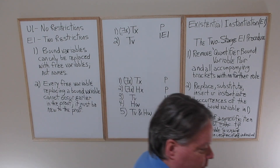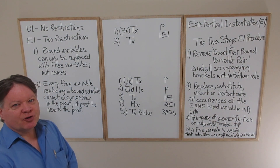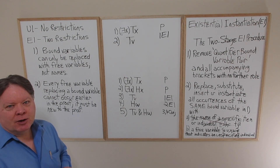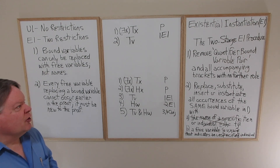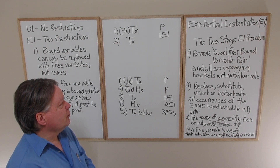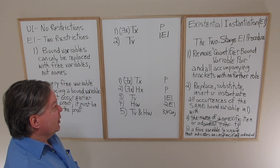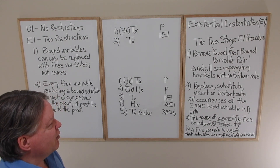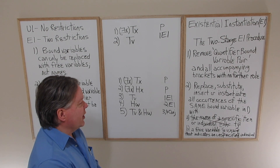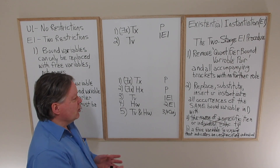Having set out Universal Instantiation, we move on to Existential Instantiation (EI). Several things are the same as UI, but there are some important differences. Like UI, EI has a two-stage procedure. The first stage — removing the quantifier bound variable pair and all accompanying brackets that play no further role — is exactly the same.